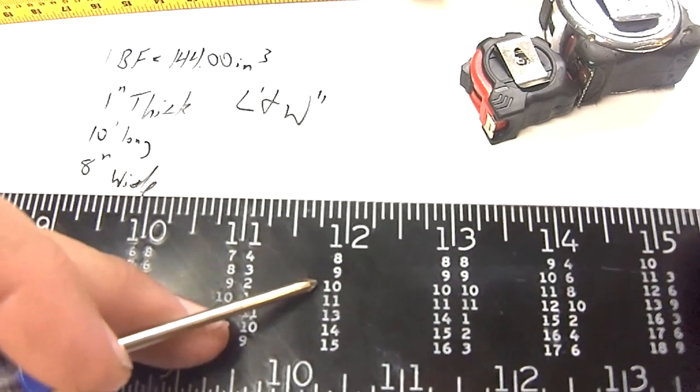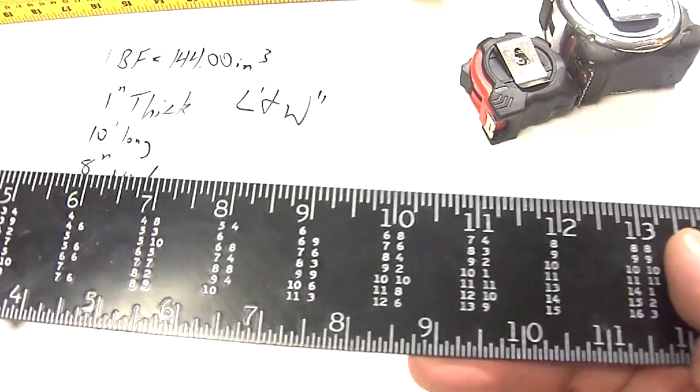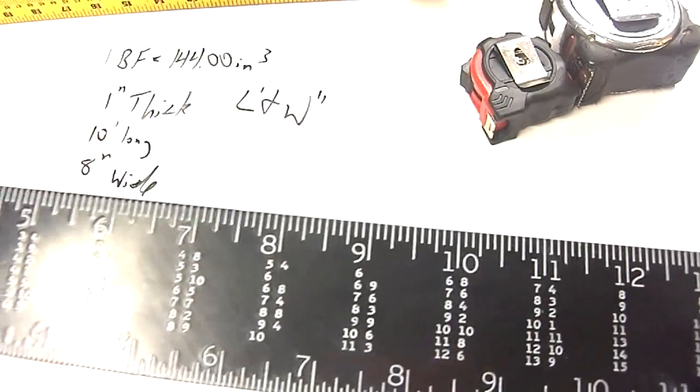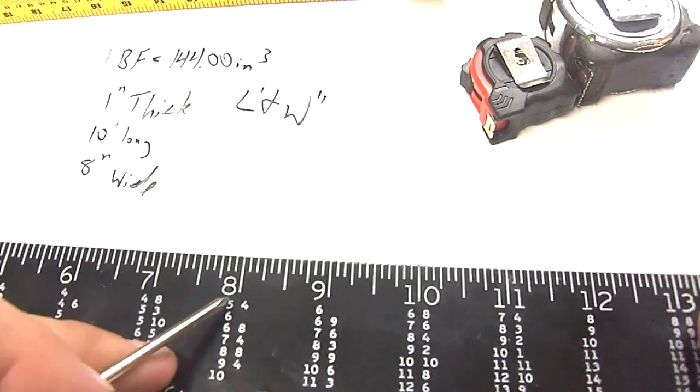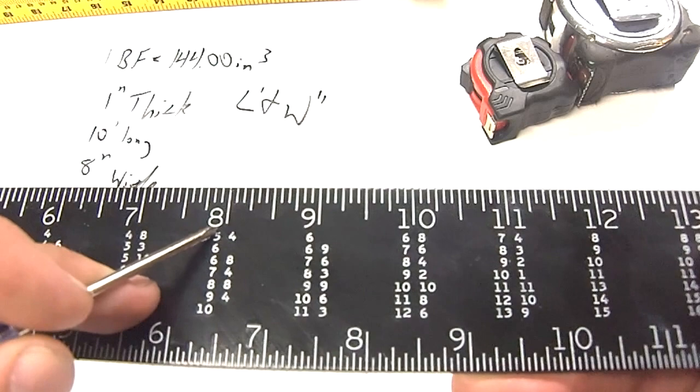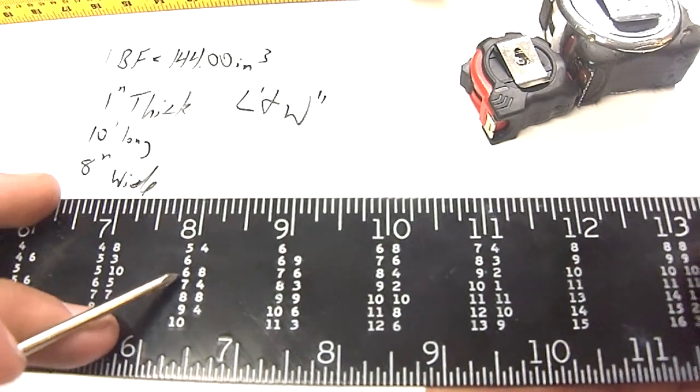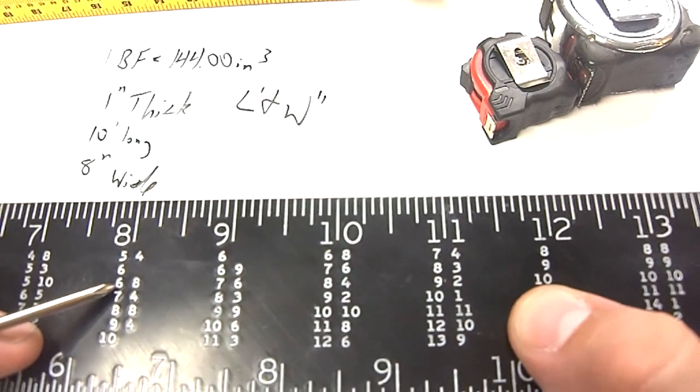Now, we're also told that it is 8 inches wide. To find the 8 inches wide, we're actually going to use this edge of the scale right here. Here is my 8 inches. That is how wide the board is. Now, we're going to be coming down to the same 3, 1, 2, 3, just like we did over here at the 12, right there.